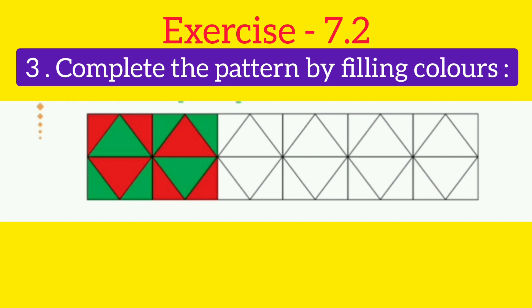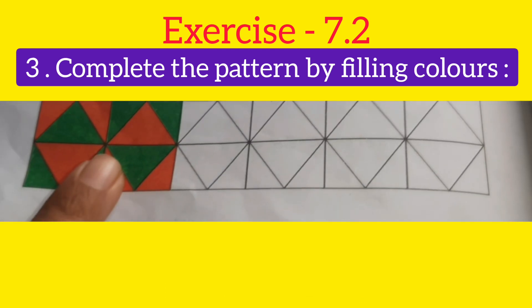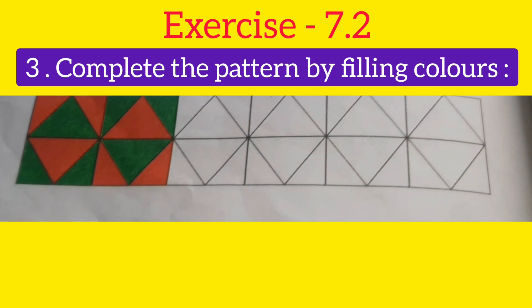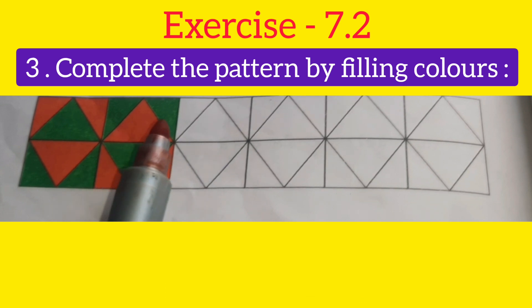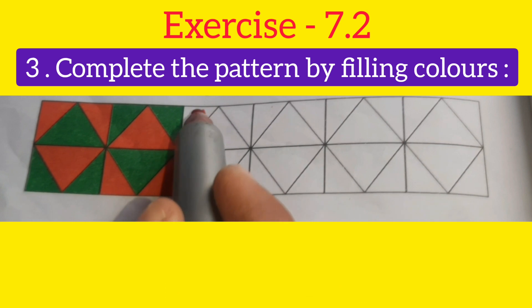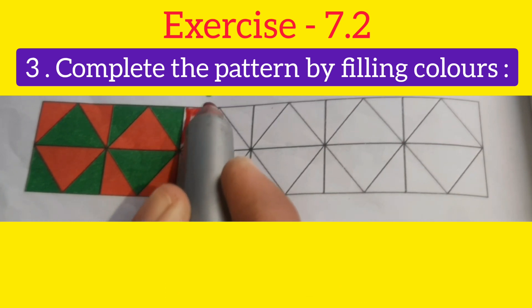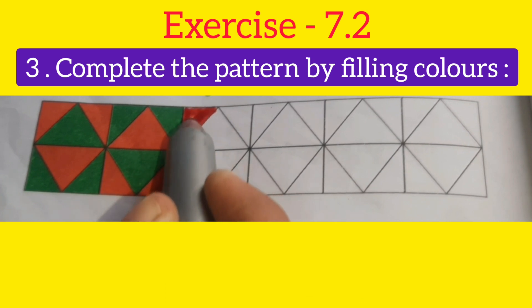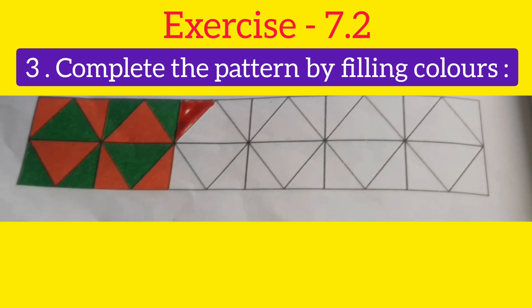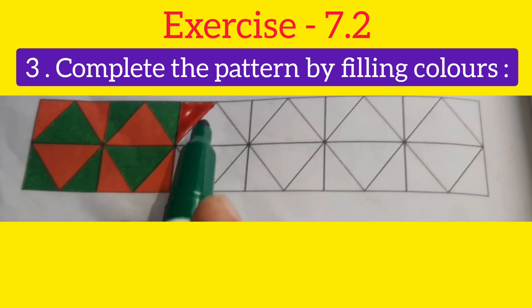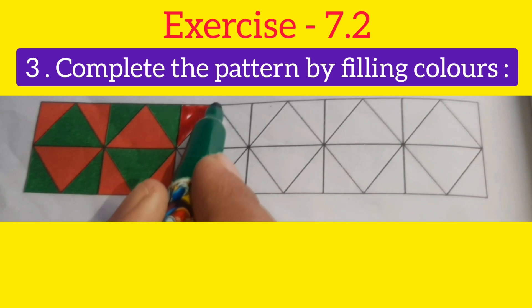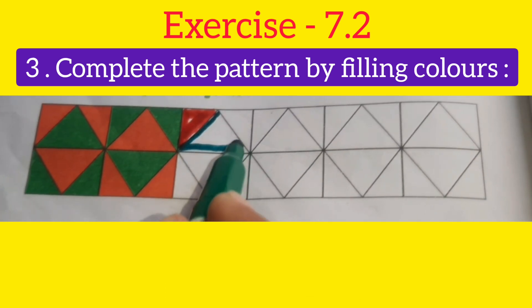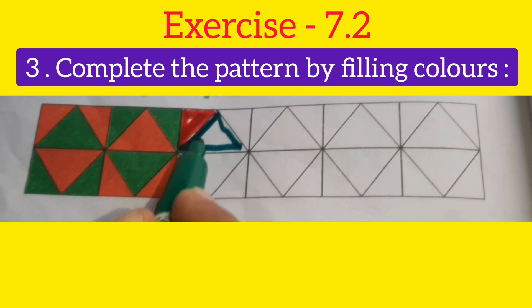Question number 3 is, complete the pattern by filling right colors. Look students, in this design, the colors are in a particular pattern. First red, then green and then again after green, we will fill red color in the upper part of the triangle. And in the triangle, after red color, we will fill the green color. So, dear students, after filling the green color, one thing we should notice that we are following the same pattern by filling the right color.